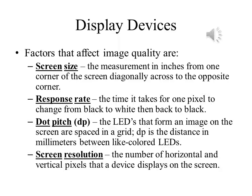Dot pitch is the distance between like-colored LEDs, or light-emitting diodes. Color monitors have three separate colors for each pixel: red, green, and blue. The other colors that we see are different proportions of these three. So we measure the distance from one pixel to the next between LEDs of the same color.